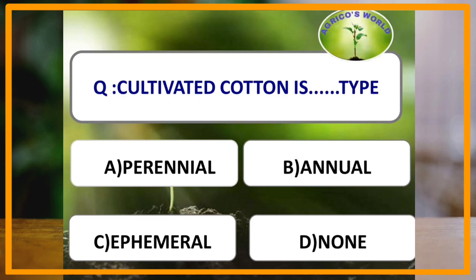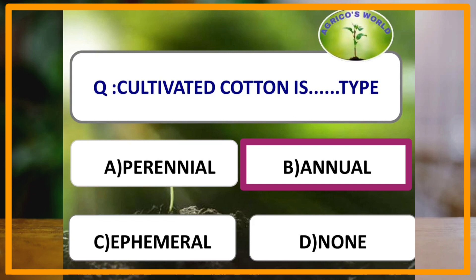Cultivated cotton is which of the following type? Generally cotton is perennial, but we cultivate it as an annual, so the answer is that the mostly cultivated type of cotton is annual type.